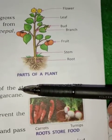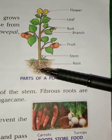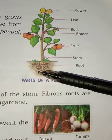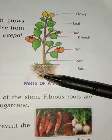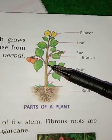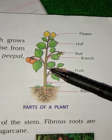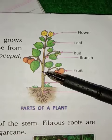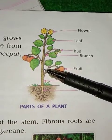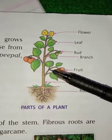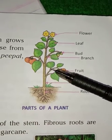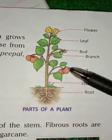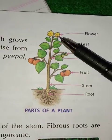The part of the plant that grows below the ground is called root. The shoot grows upwards. The shoot has stem, branches, leaves, fruits, buds, and flowers.